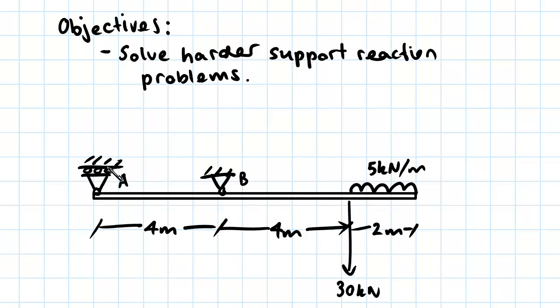this roller support here at A can only provide a force in this direction, from up to down. It can only provide a force that way because, as you can see, if it was trying to pull back the other way, these rollers would come disconnected with the support and it actually couldn't provide any force.